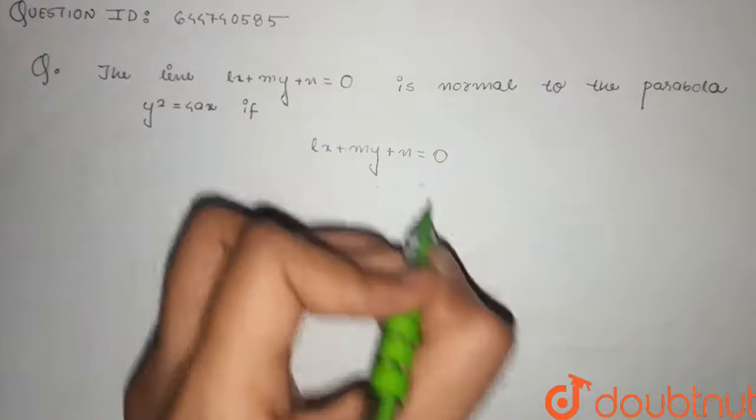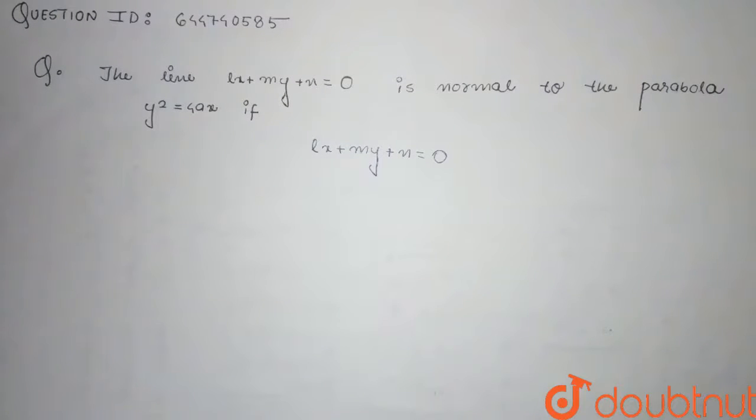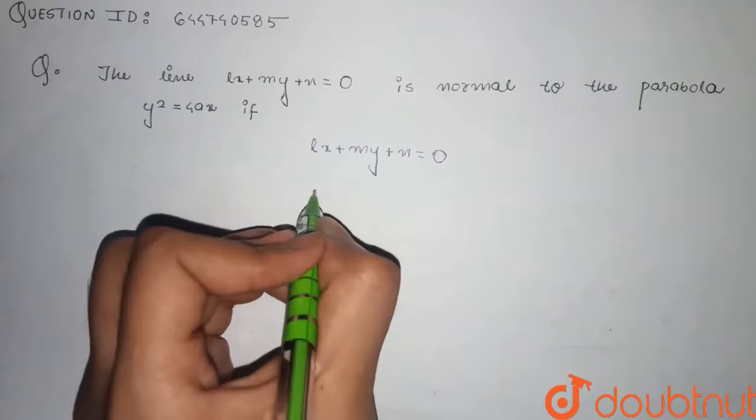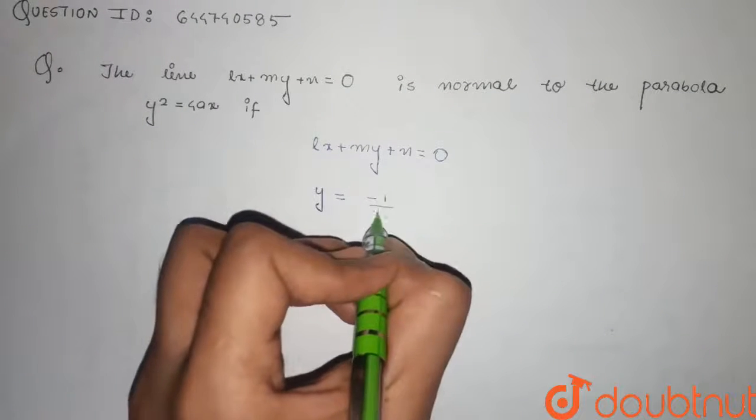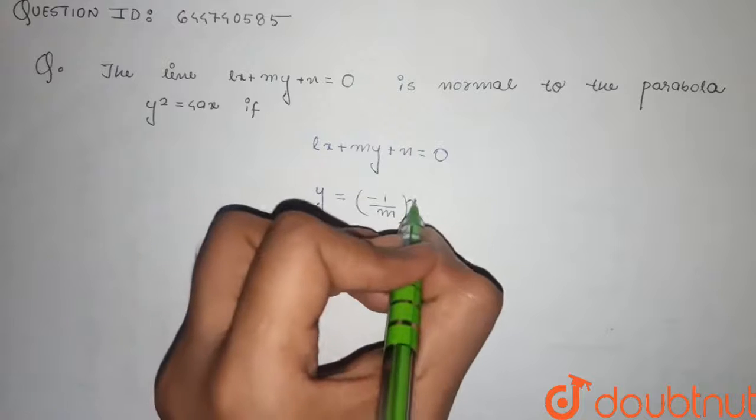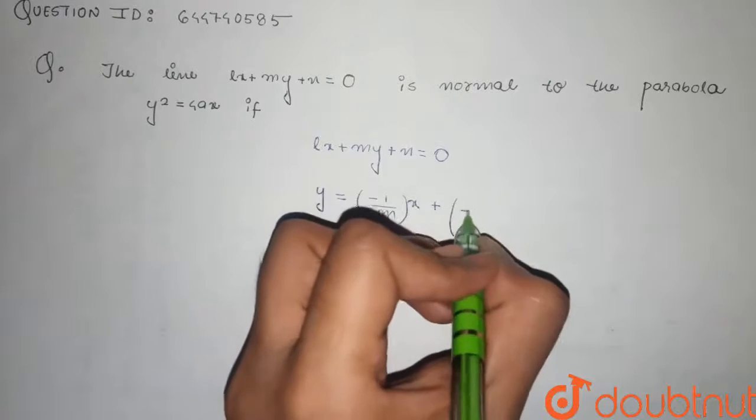So we can convert it into a standard form of y = mx + c. Converting it into the standard form: y = (-l/m)x + (-n/m).